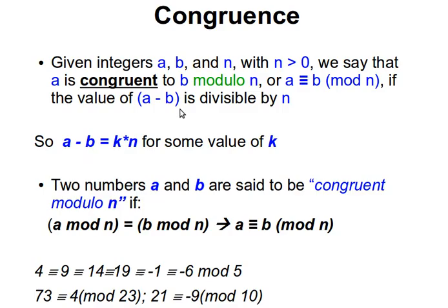Now congruence. Given two integers a and b, let's say we have any two integers, so integer numbers, no fractions. You know minus infinity, minus five, minus four, minus three, minus two, minus one, zero, one, two, three, four, five, six, seven, eight and so on and so forth to positive infinity. So two integer numbers, let's say a and b, and another integer n with n now is larger than zero. So n is a positive number, it's greater than zero. So we have three integers a, b and n. n needs to be greater than zero.